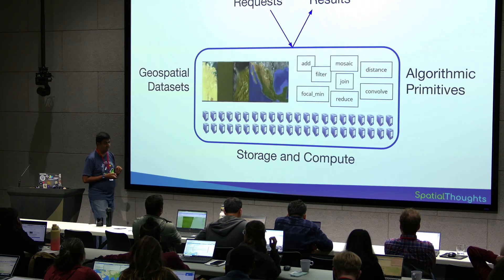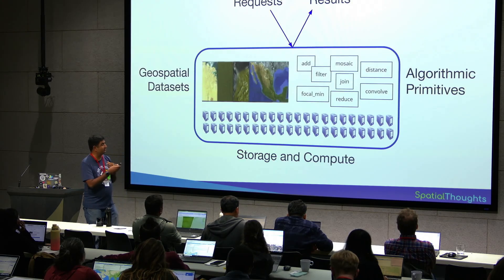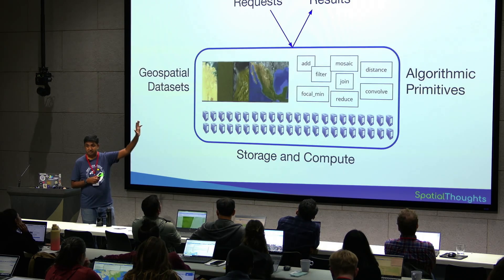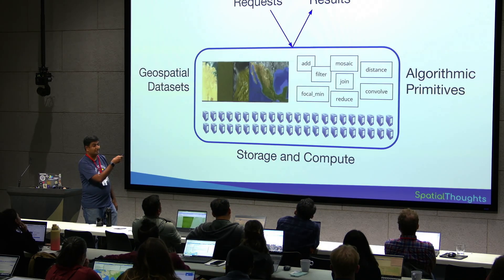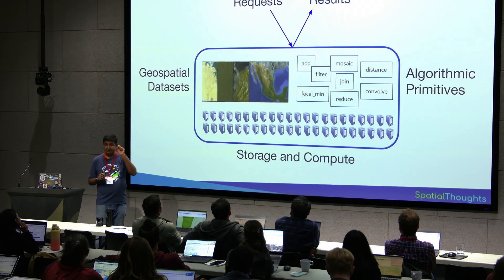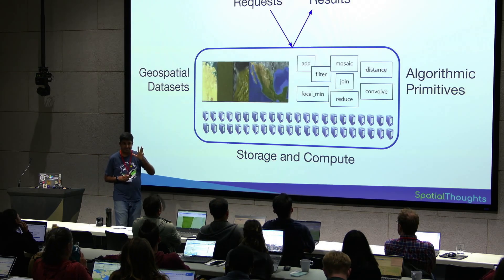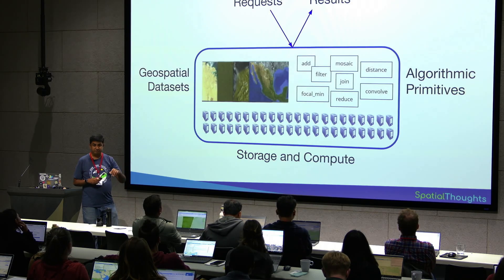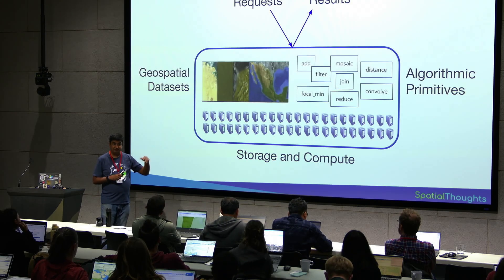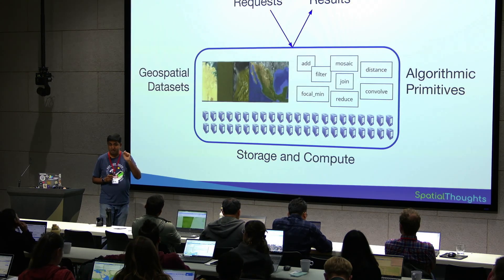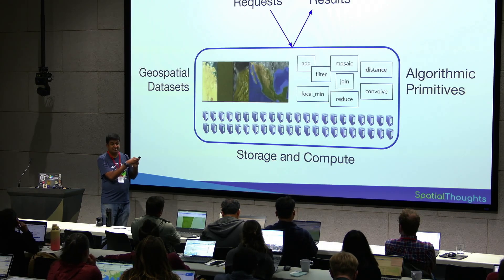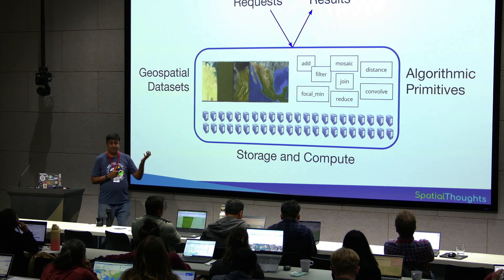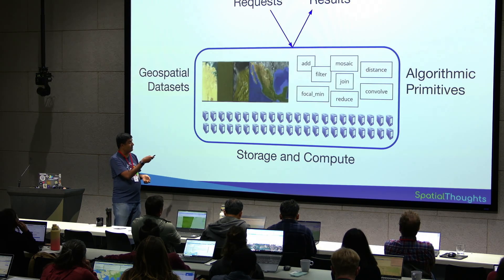Let's learn about MapReduce. This is a diagram of how Earth Engine works. The blue box represents the Earth Engine server — Earth Engine data centers. You are here. When you type your code and click Run, your code gets converted to a request that goes to the Earth Engine servers. The request can come from Python or JavaScript — it doesn't matter. It gets converted to an Earth Engine API request that gets sent to the server.